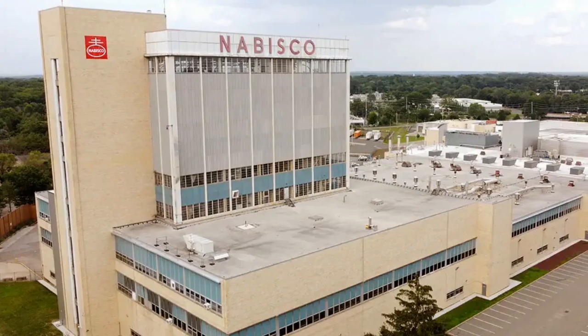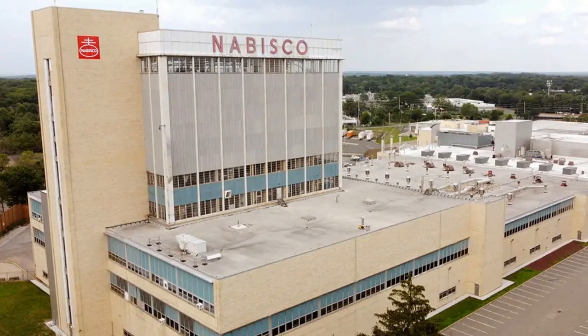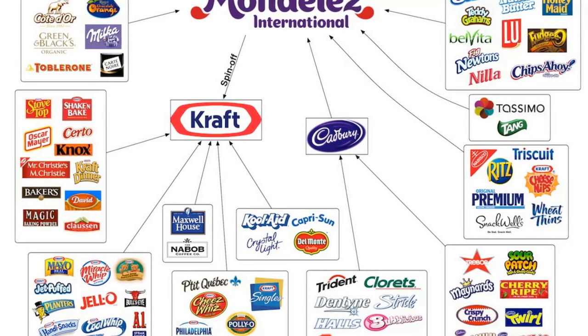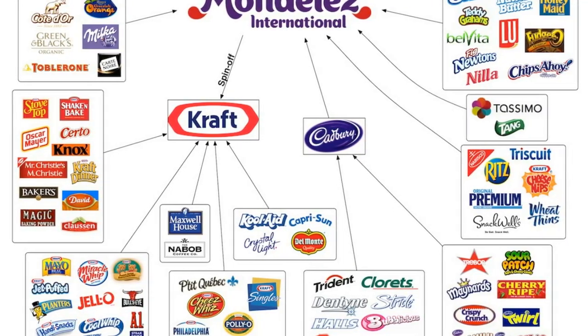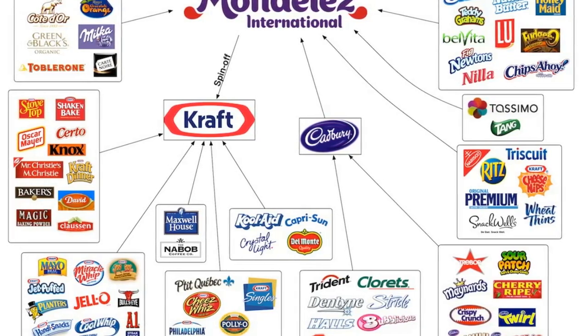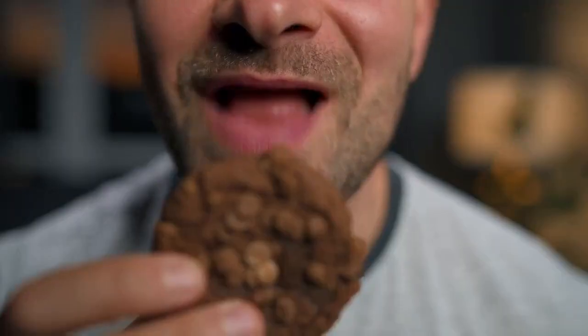Oreo cookies were created by the American company Nabisco in 1912. This US company is part of Mondelez International and is characterized by being made up of two circular black cookies joined by a sweet white cream in the center. The original ones were made of black chocolate cookies and vanilla cream, although today there are many varieties.